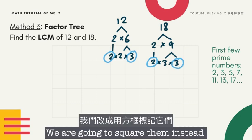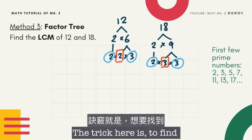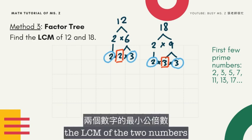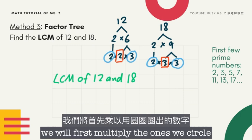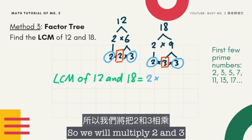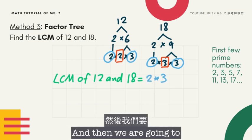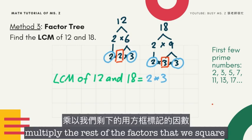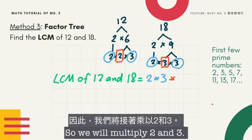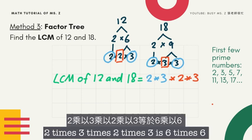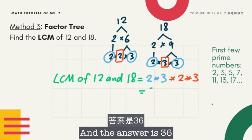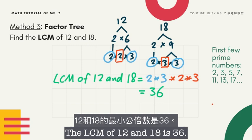We have a remaining 2 and 3 that are not shared. To find the LCM, we multiply the common factors once, then multiply the remaining factors. So we multiply 2 times 3 (the common pair) times 2 times 3 (the remaining factors). That gives us 6 times 6, and the answer is 36. So the LCM of 12 and 18 is 36.